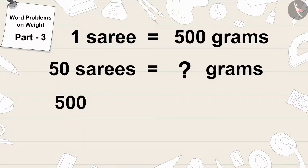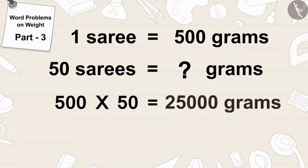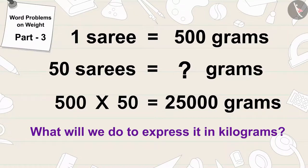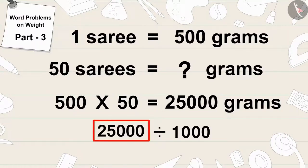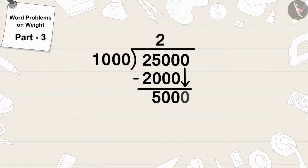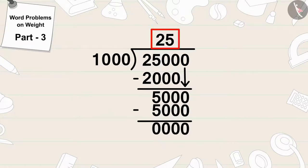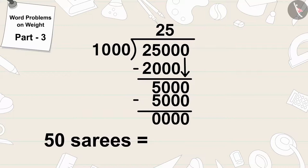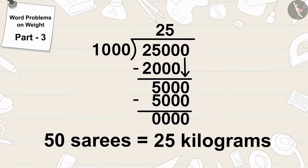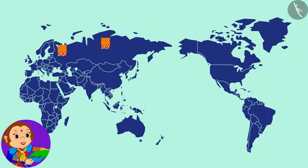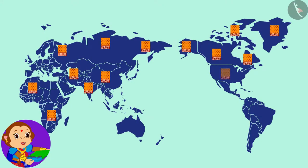500 multiplied by 50 equals 25,000 grams. Now, to express it in kilograms, we will divide 25,000 by one thousand. 25,000 divided by one thousand equals 25. In this way, the total weight of 50 saris of Bano will be 25 kilograms. Bano sent parcels of 50 of her saris abroad, and Bano's saris became famous all over the world!